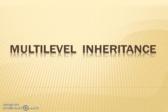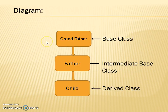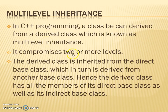Hello friends, today we are going to learn about multi-level inheritance, as we completed with single-level inheritance. Multi-level inheritance is nothing but deriving a class from the base class and then deriving one more class from that derived class. It is called an intermediate base class. In C++ programming, a class can be derived from a derived class, which is known as multi-level inheritance. It comprises two or more levels.